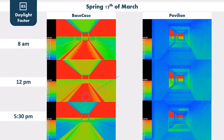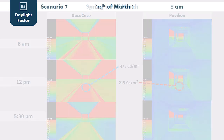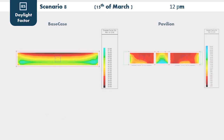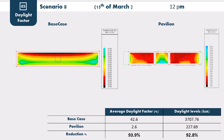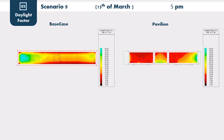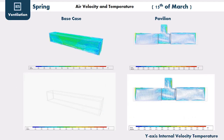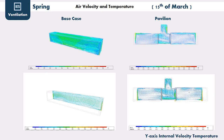Daylight factor was improved in the pavilion and came within comfort level as per Istidama. In Scenario 7, daylight factor became 4.5% and daylight level 264 lux. In Scenario 8, daylight factor became 2.6% and daylight level 227 lux. In Scenario 9, daylight factor became 5.9% and daylight level 302 lux. The velocity contour shows that indoor air velocity improved due to the introduction of the Burjeel and air temperature was reduced to comfort levels.